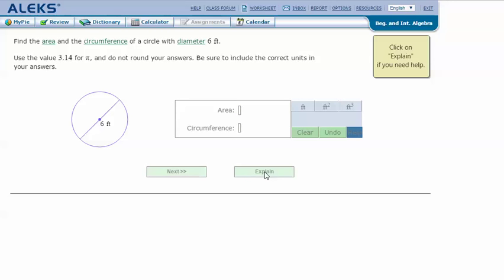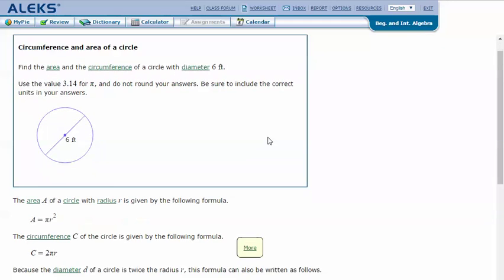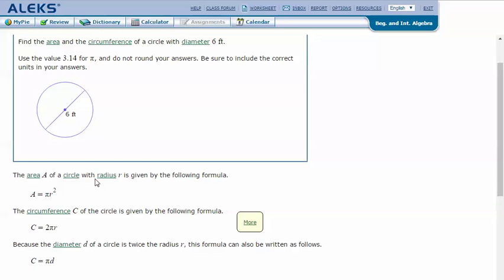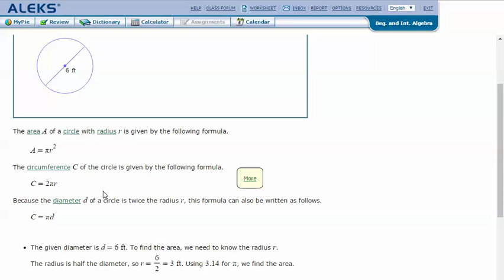The area of a circle with a radius r is given by the following formula: A = πr². The circumference C of the circle is given by the following formula: C = 2πr. And because the diameter of a circle is twice the radius, this formula can also be written as C = πd, or pi times the diameter.